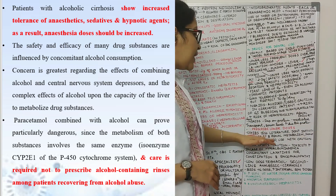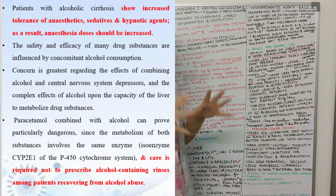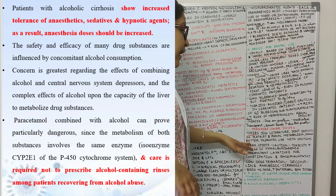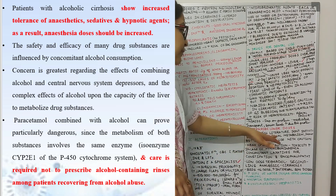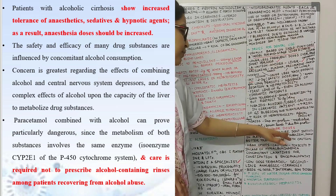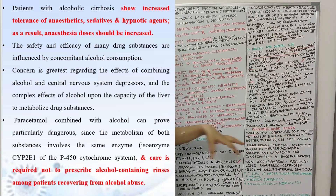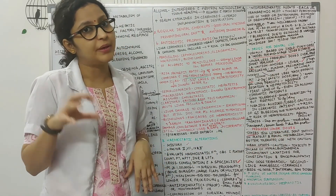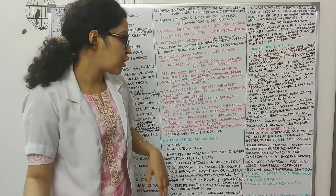Then coxibs — there is little literature on coxibs, but they do not interfere with platelet and renal metabolism, so they are better tolerated. Still, they should be used with caution.